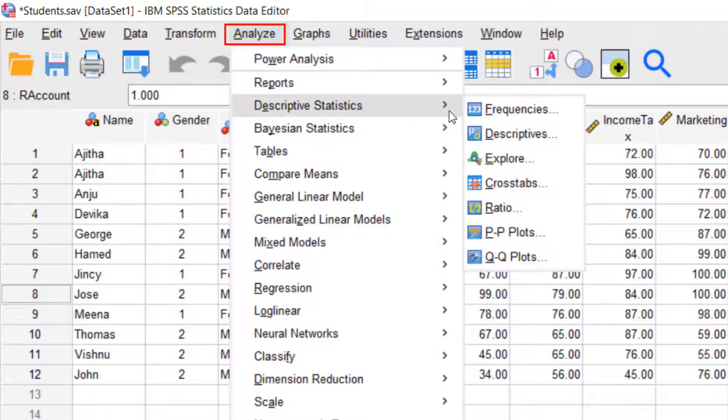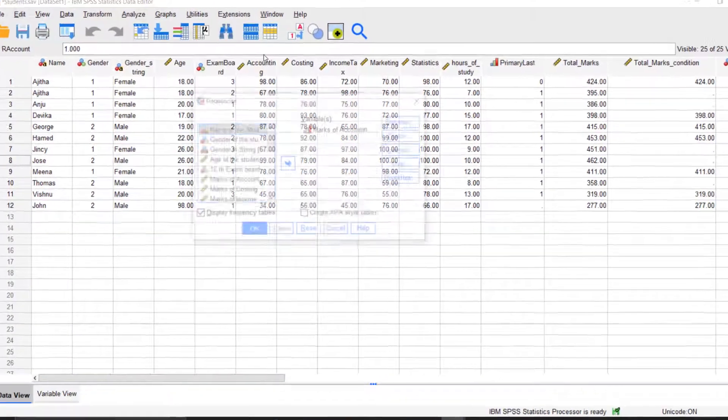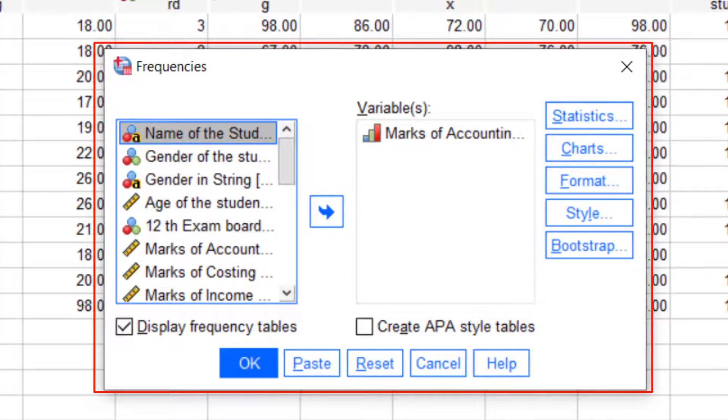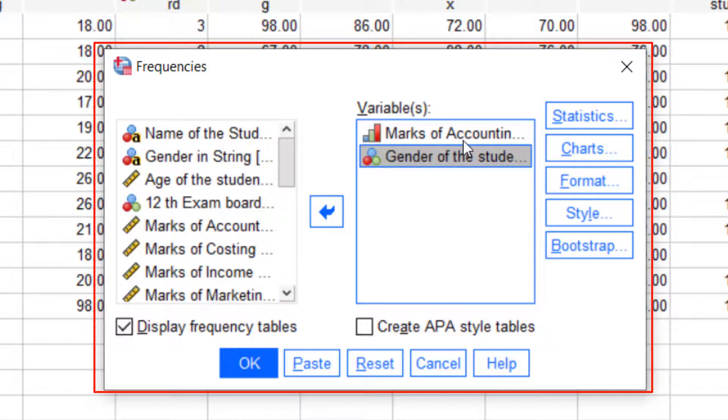Select descriptive statistics and then click on frequencies. From the frequencies dialog box, select the variables.